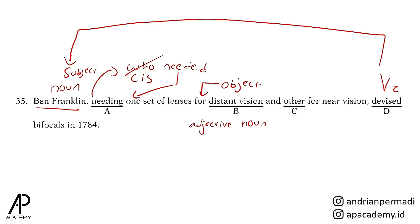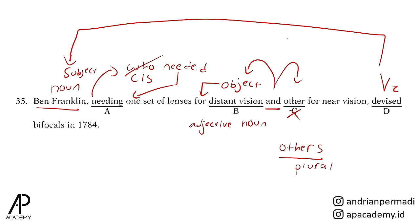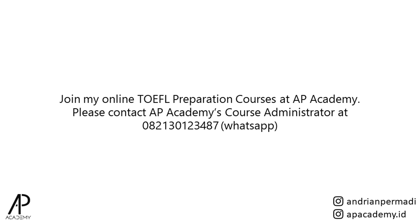Pilihan yang salah dan yang kita pilih adalah other. Apabila other dipakai tanpa adanya noun di sebelah kanannya atau setelahnya, maka other tersebut perlu memiliki tambahan S menjadi others, yang memiliki fungsi untuk menunjukkan suatu noun atau hal yang plural. Sedangkan di sini ada penggunaan conjunction and di mana structure sebelum and dan setelahnya harus dalam bentuk yang sama. Vision dalam hal ini dikategorikan sebagai uncountable noun, yang otomatis memiliki jumlah tunggal atau singular. Untuk mewakili suatu hal yang tunggal, maka yang dipakai bukan other tapi another.